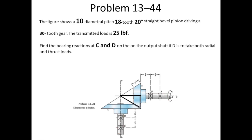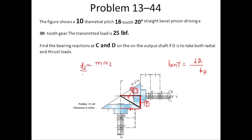We can take this right-angle triangle where the angle is gamma. Since gear 2 is the pinion, this line is the base, this line is the hypotenuse, and this line is the perpendicular — which is the radius of the pinion. So tan(γ) = perpendicular/base = radius of gear 2 / radius of gear 3. Multiplying numerator and denominator by module m, we get d2/d3 = N2/N3. Therefore tan(γ) = N2/N3 = 18/30, giving γ = 30.96°.